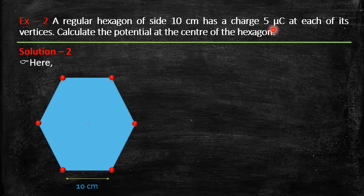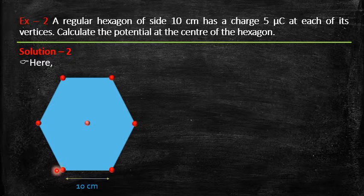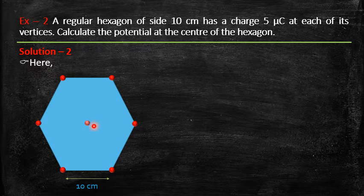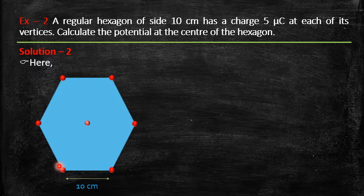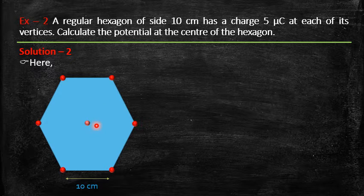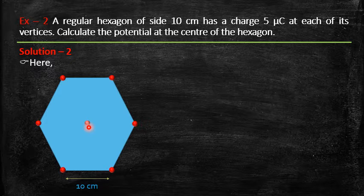We want the potential at the center. The potential due to each charge is kq/distance. Luckily all charges are equal and all distances from center to vertex are equal, so if we find the potential due to one charge we just multiply by 6 — because potential is a scalar quantity. We don't need to consider direction here, unlike electric field which requires vector summation.